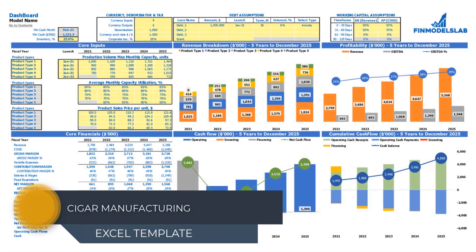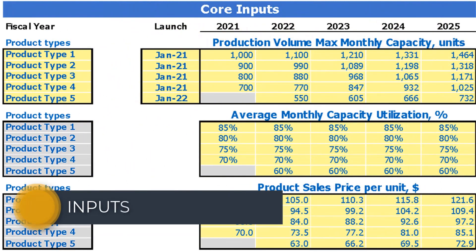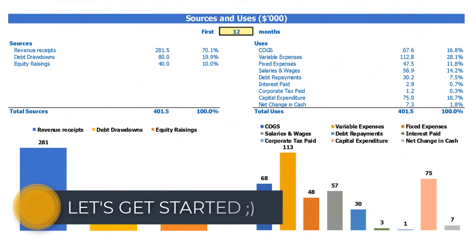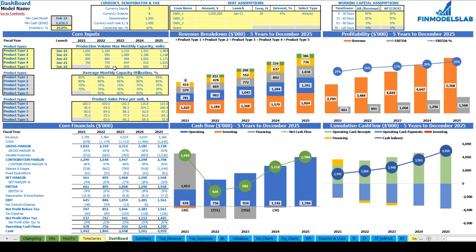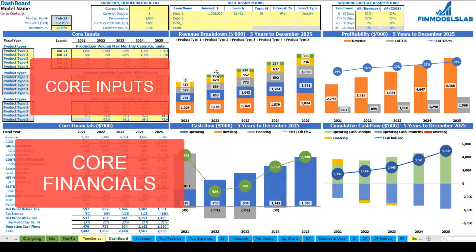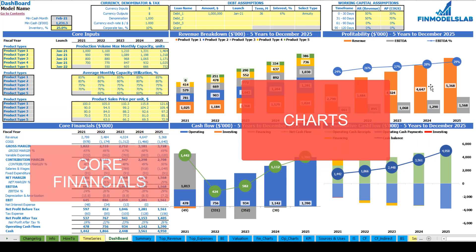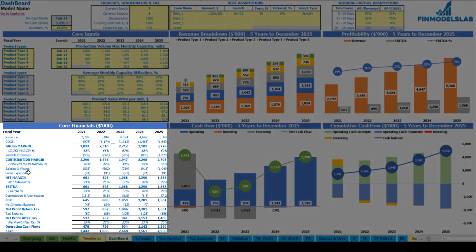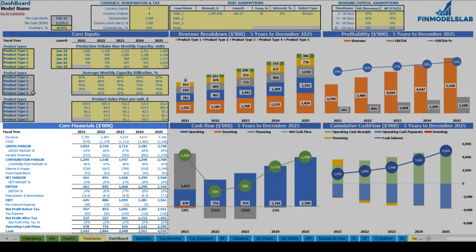Hello, in this video I'm going to walk you through the financial model Excel template. I will show you the main inputs, the core outputs, reports, and charts. On the dashboard you can set up your core inputs or drivers for the model, review the core charts such as revenue breakdown, profitability, cash flow, and cumulative cash flow, and also review the core financials which is a summary of your financials by years.